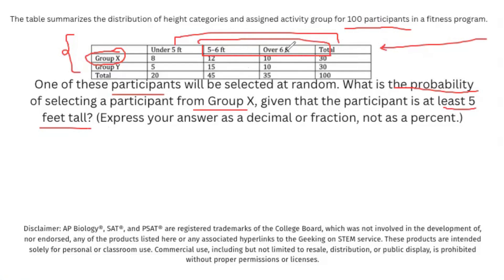Because of this, the total participants that are at least 5 feet or higher is going to be the sum of 12 plus 10. So this is our part divided by our whole. Our whole is going to be both categories, group X and group Y, that they're trying to look at within that restriction of height. So because of this, we have 45 plus 35, because that's the total in 5 to 6 feet or over 6 feet.